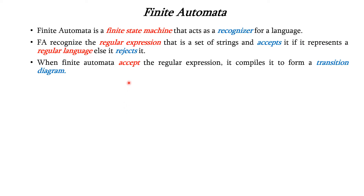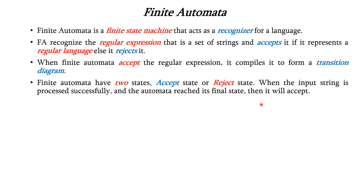When finite automata accepts the regular expression, it will compile it to form a transition diagram. It has two states: Accept state or Reject state. When the input string is processed successfully and reaches its final state, it is considered as Accept state. Otherwise, it is considered as Reject state.